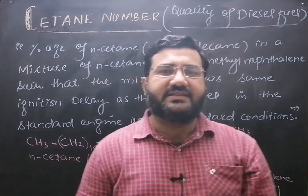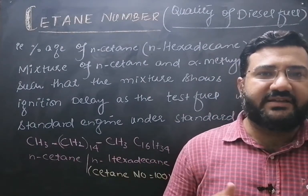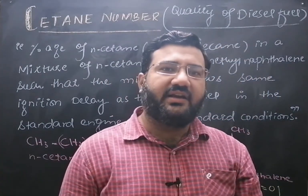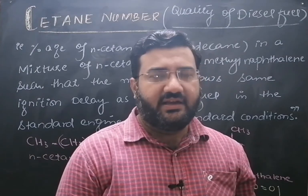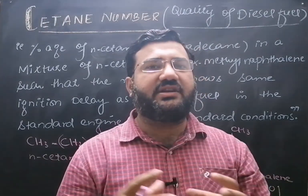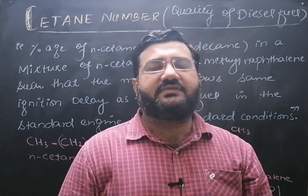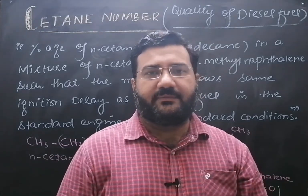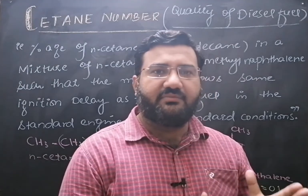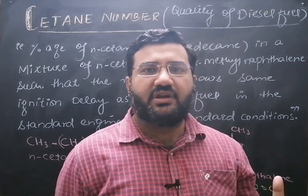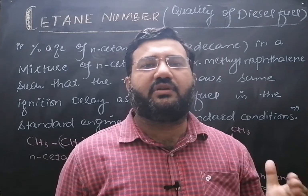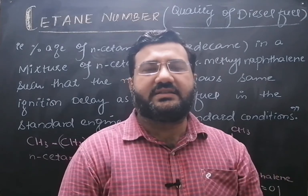Basically, cetane number is the percentage of normal cetane in a mixture of normal cetane and alpha-methyl naphthalene, and this mixture will show the same ignition delay as the test fuel is showing. So basically, cetane number is the number which shows how much time is required for the ignition of a sample of diesel fuel.